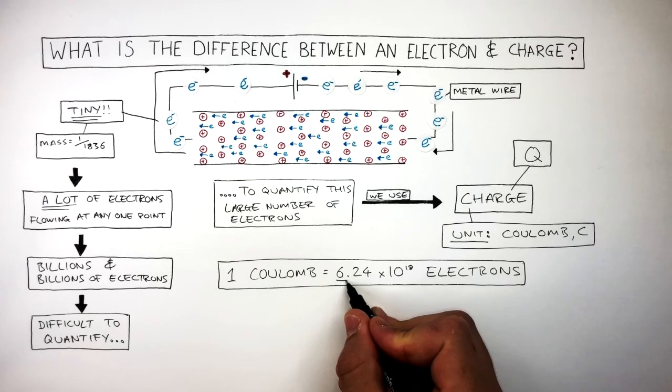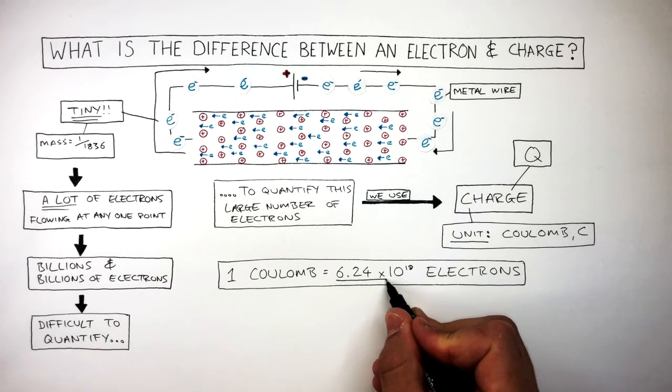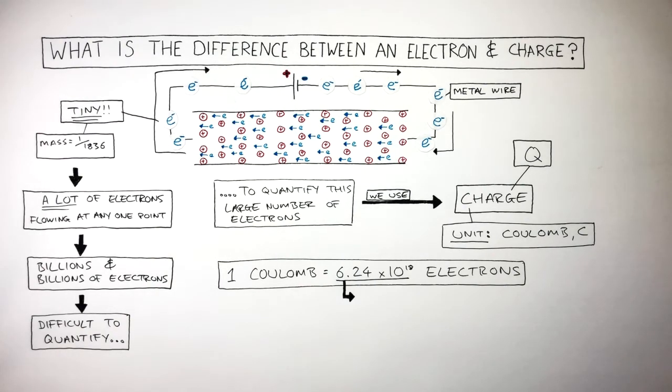6.24 times 10 to the power of 18 is a very large number. It looks like this. Too big for me to say. There are this many electrons in one coulomb. So you can see why we need to use charge to be able to quantify how many electrons are flowing at any one given point.